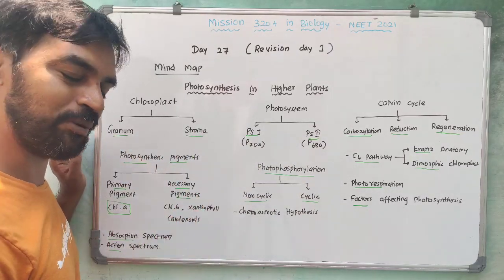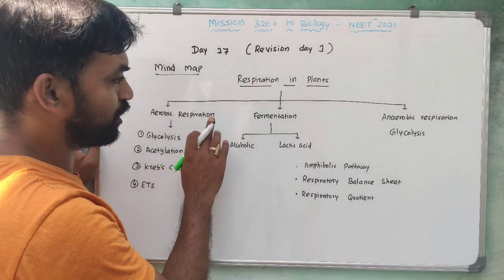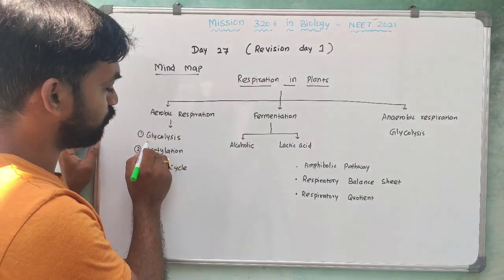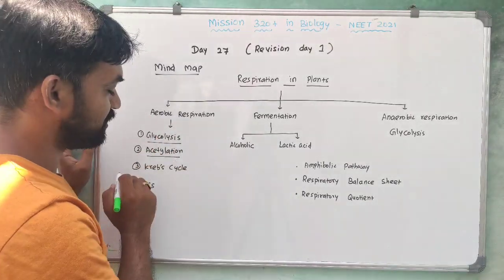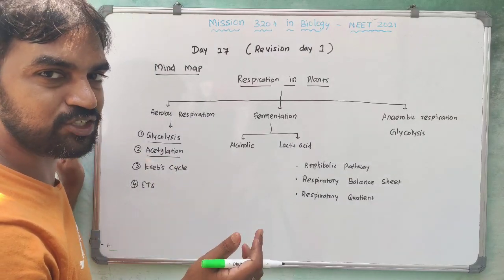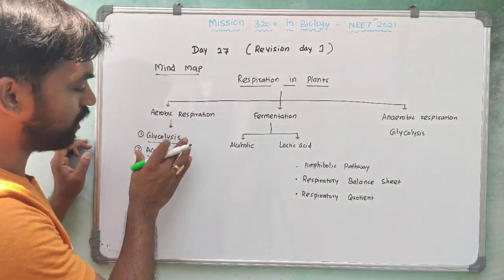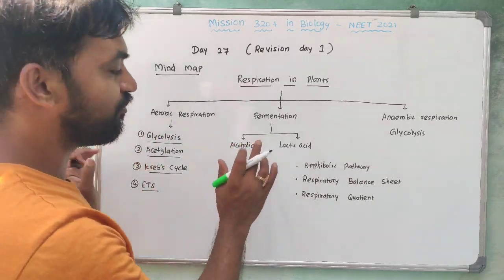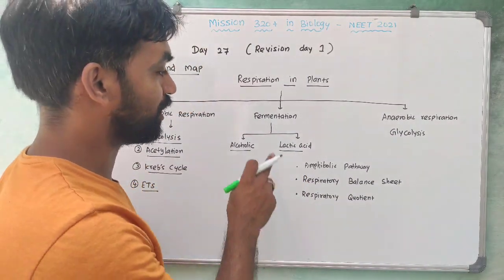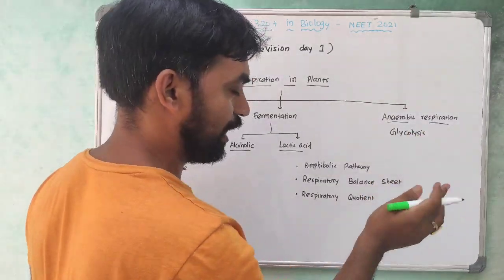Now, mind map for Respiration. Respiration mind map: anaerobic respiration, aerobic respiration, and fermentation. Aerobic respiration has four steps — glycolysis, acetylation (oxidative decarboxylation of pyruvic acid), Krebs cycle, and electron transport system. Fermentation has two types: alcoholic fermentation and lactic acid fermentation. Fermentation is a form of anaerobic respiration.